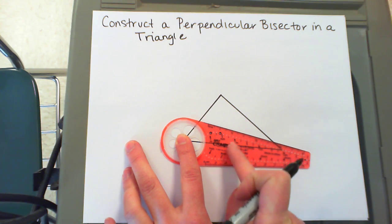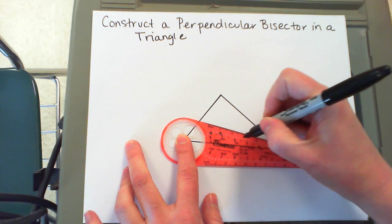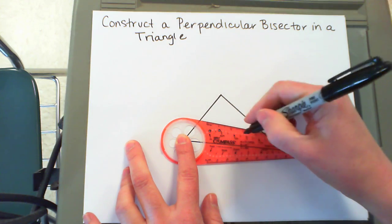This looks about halfway, so I'm going to go farther than halfway. You want to make an arc above and below.